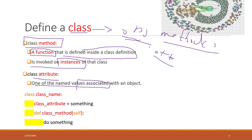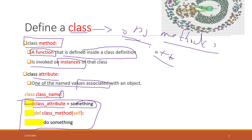Let's look at the syntax for defining a class. We use the class keyword followed by the class name and a colon. After that we need indentation to indicate that the following part belongs to the class definition. We can define a class attribute, and we can also define a class method, which is essentially a function. The first argument of a class method is always self. The function body needs further indentation, and all code at that indentation level still belongs to the class definition.